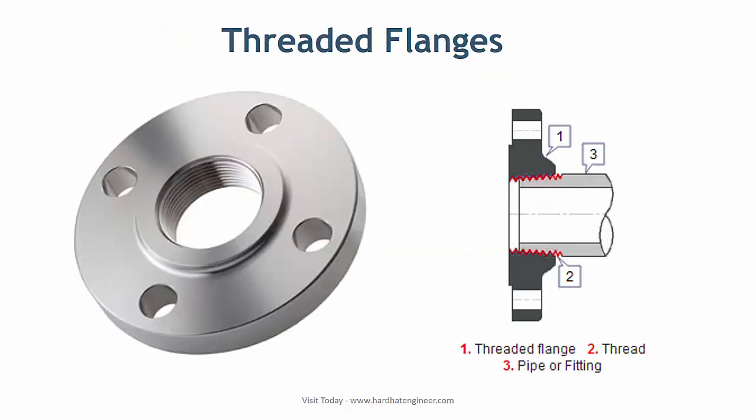Threaded flanges are also known as screwed flanges. They have a thread inside the flange bore which fits on the pipe with a matching male thread on the pipe. This type of joint connection is speedy and simple but not suitable for high pressure and temperature applications. Threaded flanges are mostly used in utility service such as air and water.